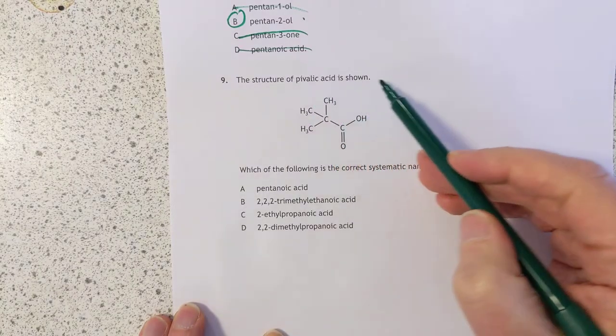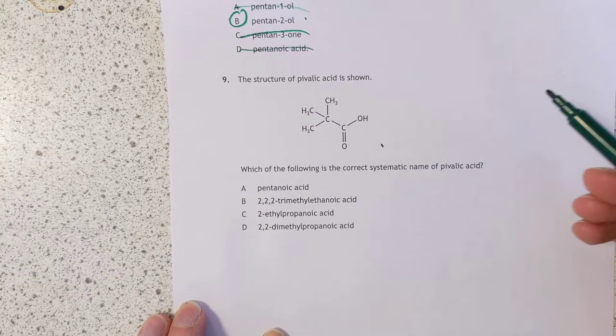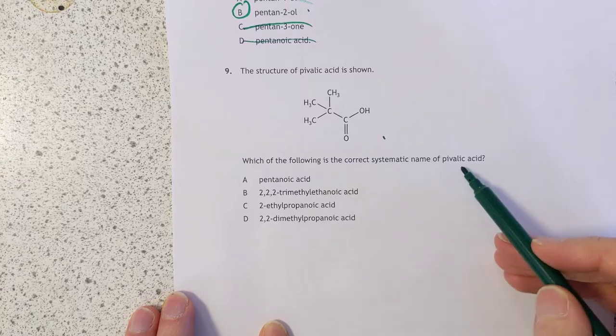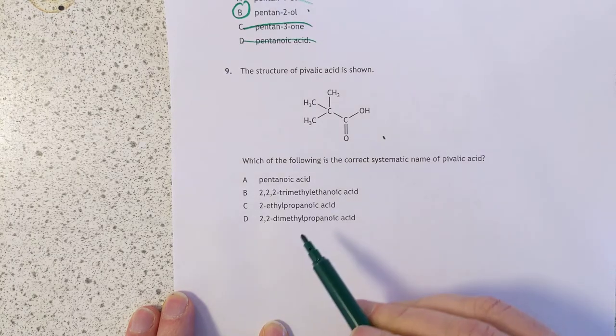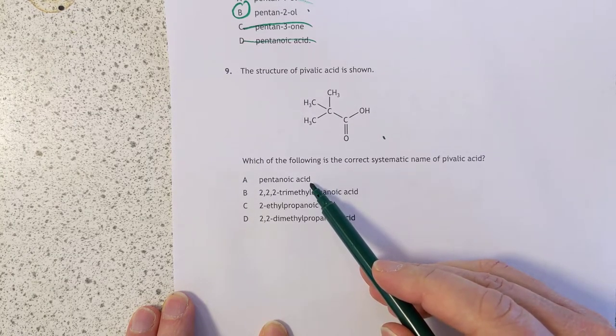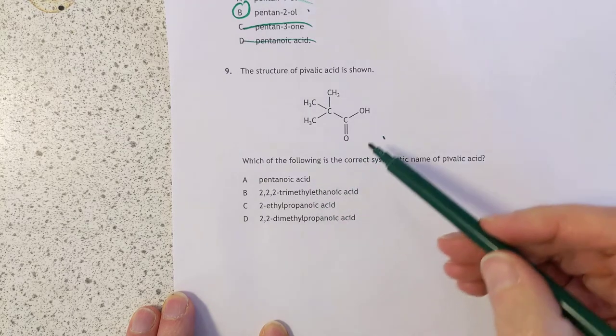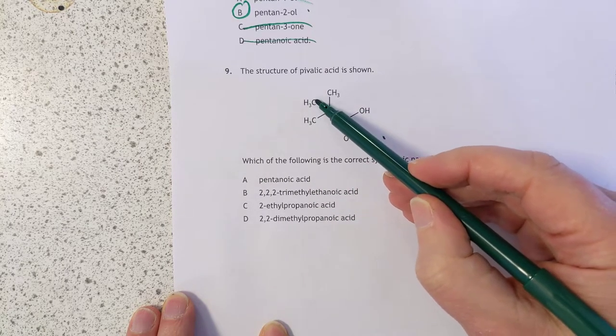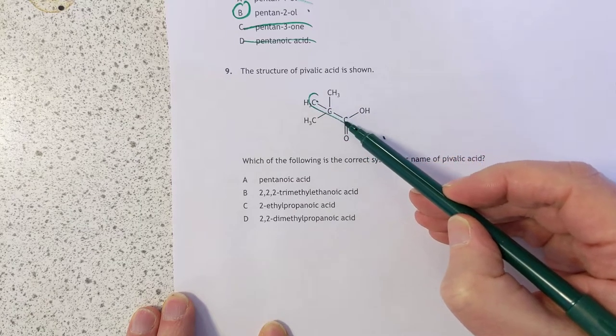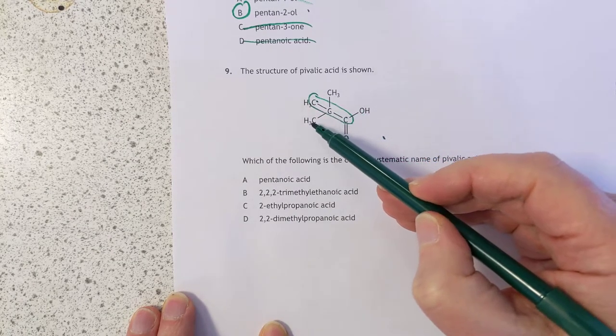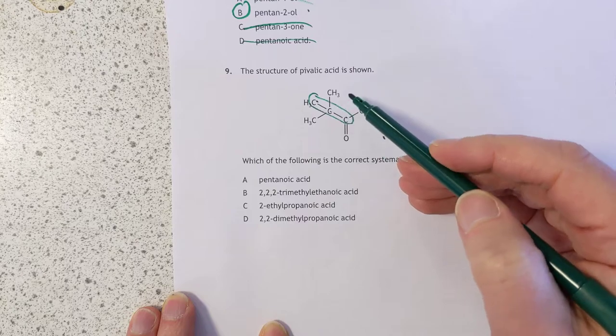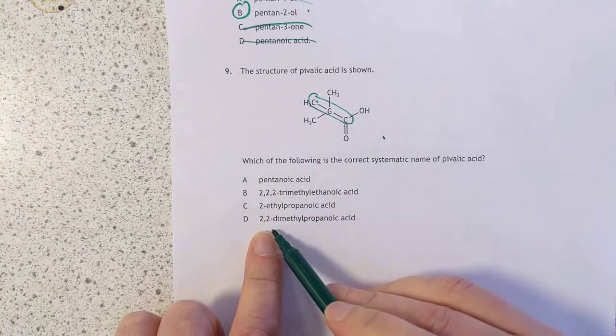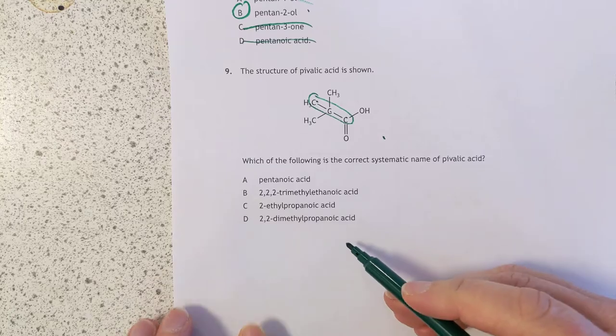Question 9: Which of the following is the correct systematic name? Pentanoic acid, no. Because we've got one, two, three in a chain there. So that's basically your skeleton. So it's like propanoic acid with two methyl branches on it, on the second one. So I'm going to go with 2,2-dimethyl propanoic acid.